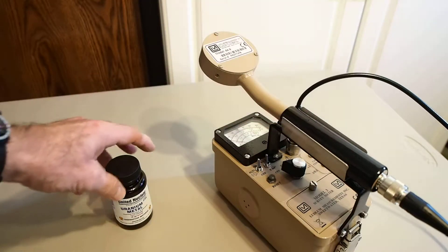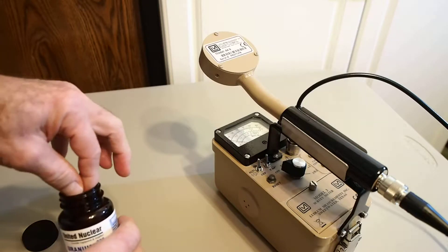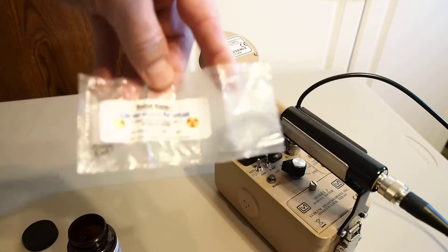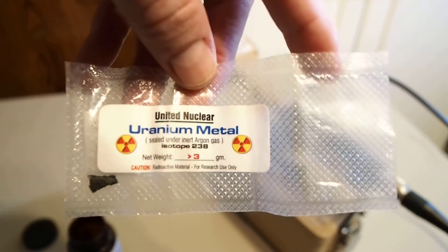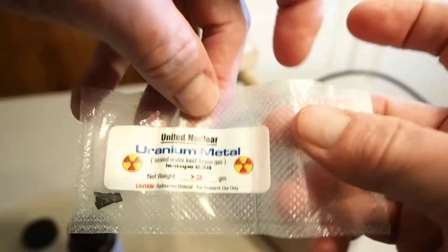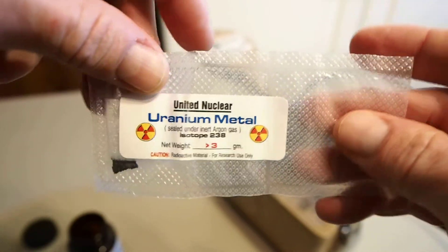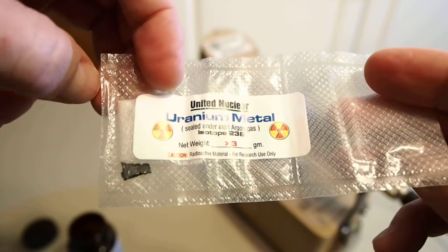We'll take a look at our uranium metal. This particular specimen is just slightly over 3 grams of highly refined uranium-238. It's also sealed in inert argon gas within this plastic bag so that it maintains the integrity of the specimen.